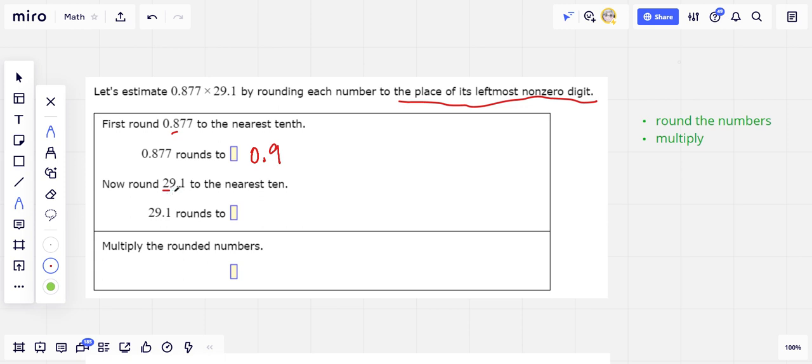Here, since we're rounding to the tenth place, we look at the ones place and ask, is that 5 or above or below 5? And it's above again, so we're going to round up from 29 to 30. That's the nearest 10 to 29.1.